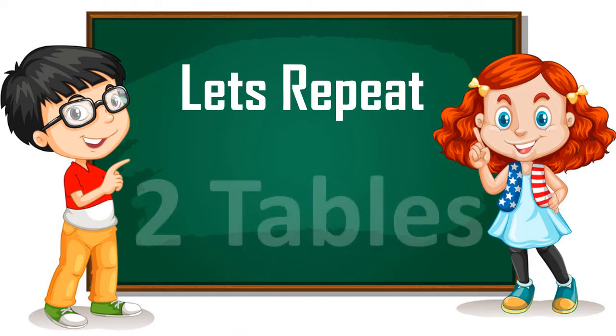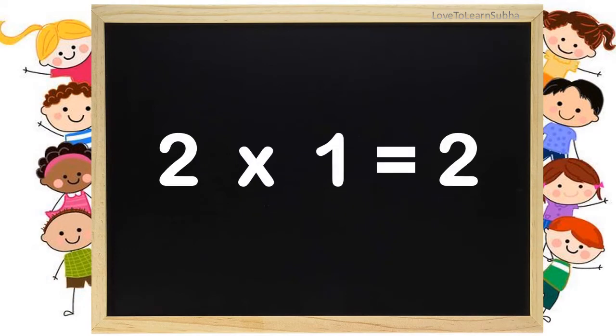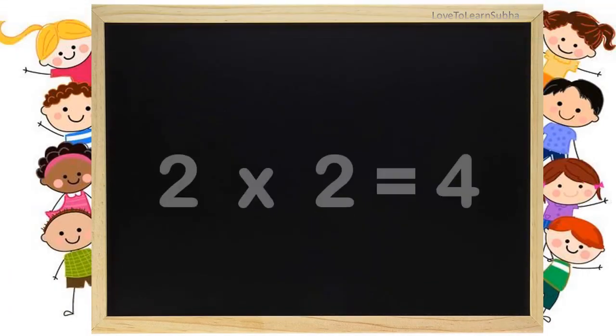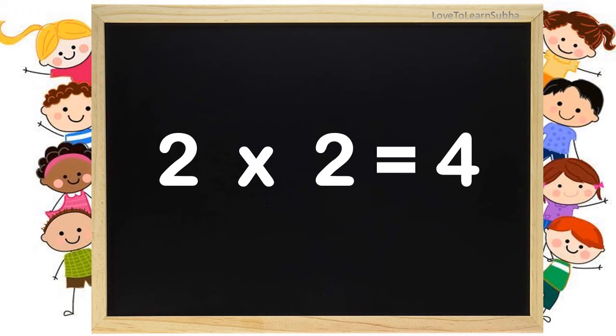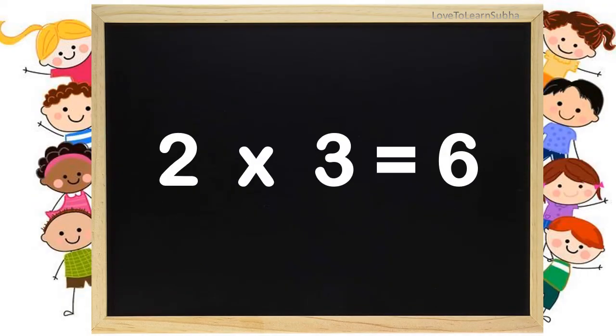Now let's repeat the 2 tables once again. 2 ones are 2. 2 twos are 4. 2 threes are 6. 2 fours are 8.